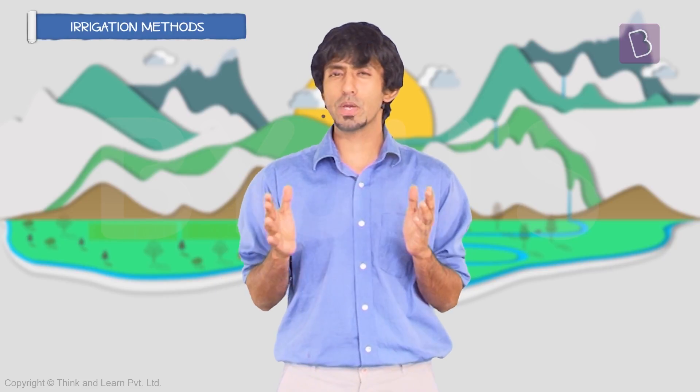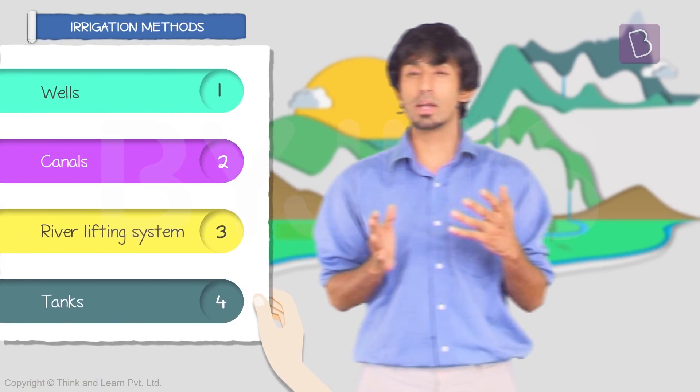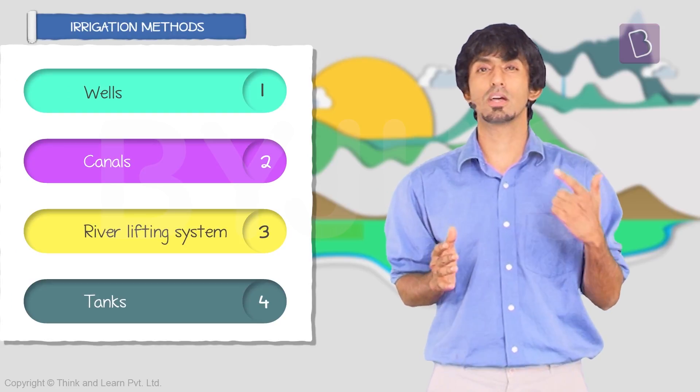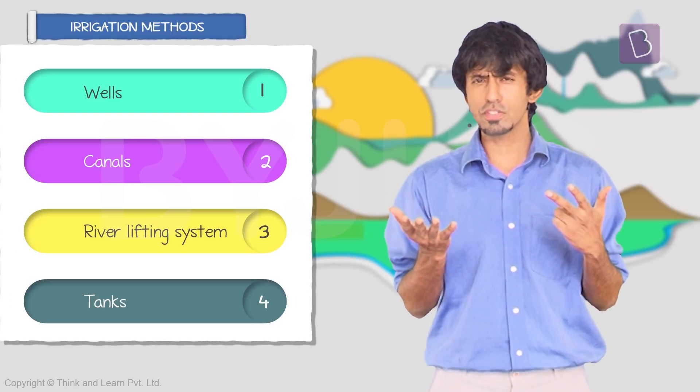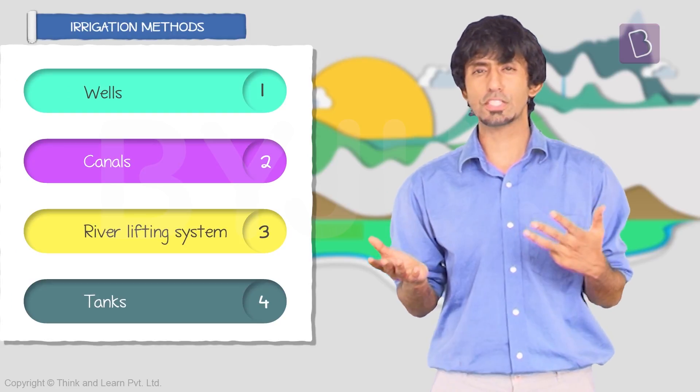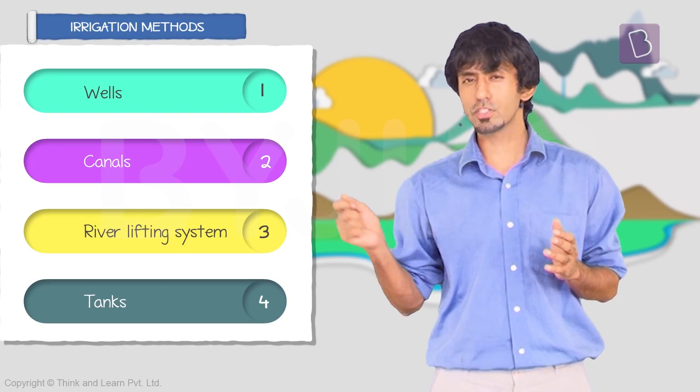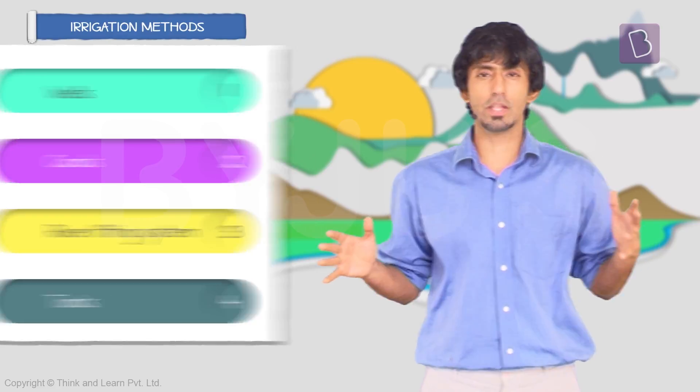There are four main ways in which we irrigate. They are wells, canals, river lift systems, and tanks. We will discuss a couple of others as well, but these are the main ones.